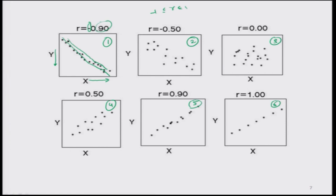In figure 2, there is also a downward trend, but the points are not as close as in figure 1. So the value of the correlation coefficient in figure 2 is smaller in magnitude: −0.50. Since the relationship is decreasing, this is indicated by the negative sign. The value in figure 1 is −0.9 and in figure 2 is −0.5, indicating that the points in figure 2 are not as close to the line.